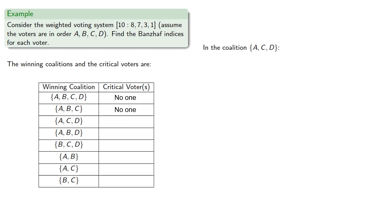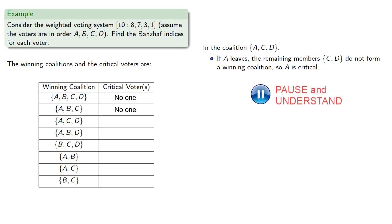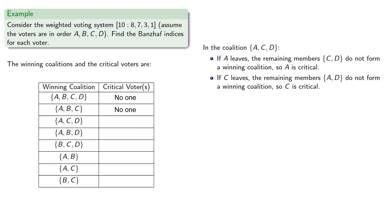How about the coalition A, C, D? If A leaves, the remaining members are C and D, and they are not one of our winning coalitions, so A is a critical voter. If C leaves, the remaining members A and D again do not form a winning coalition, so C is critical. But if D leaves, the remaining members are A and C, and this is a winning coalition, so D is not a critical voter.